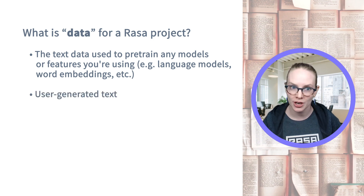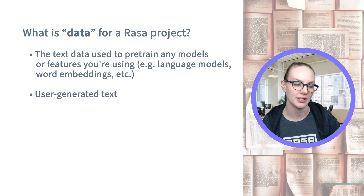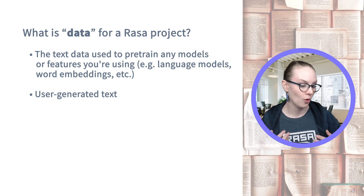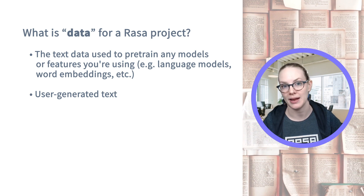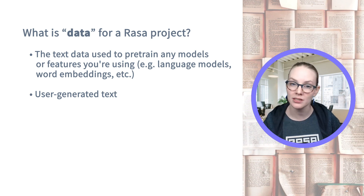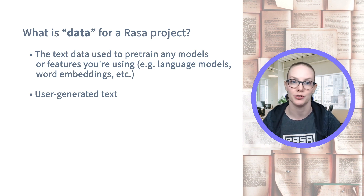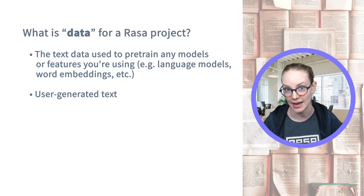User-generated text is another major source of data. This is something like: what are all the different ways that people have said hello to your assistant, and how can you map those onto a single intent category?